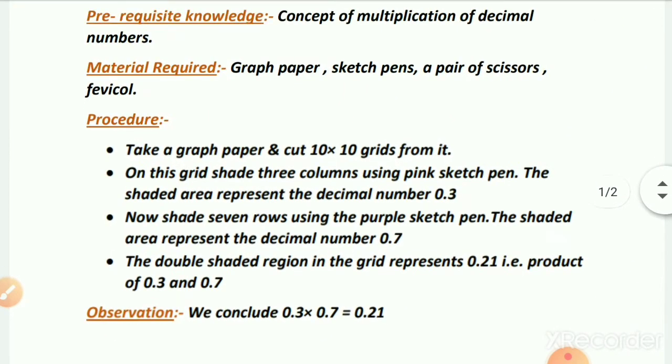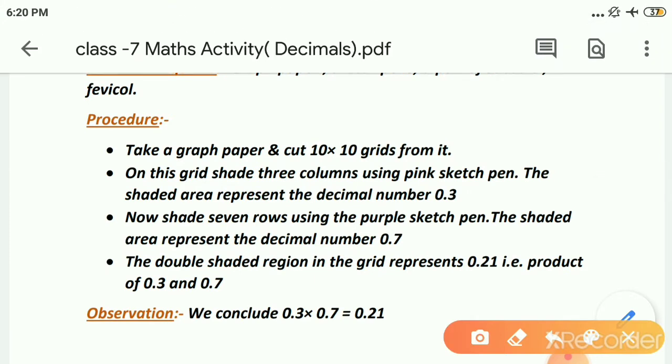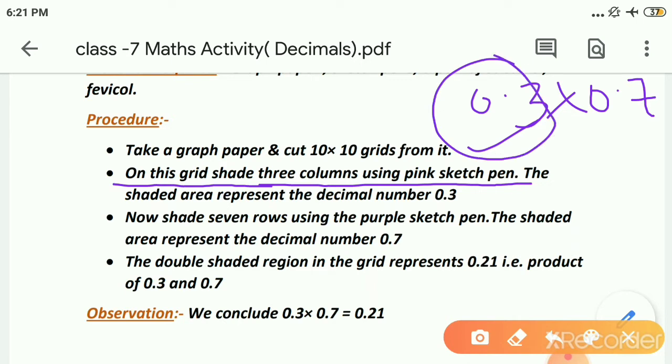Now what we have to do with this graph paper? Let's be focused on the procedure. So take a graph paper and cut 10 by 10 grids from it. 10 vertical and 10 horizontal line you have to take this graph paper. Now after this on this grid shade 3 columns using pink sketch pen.